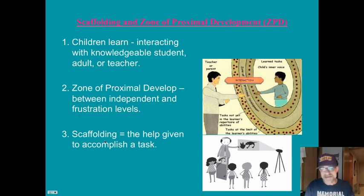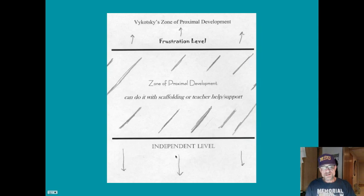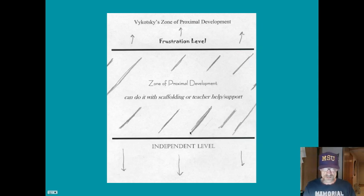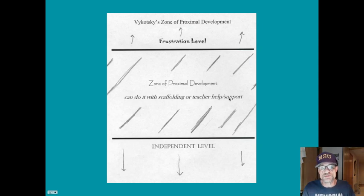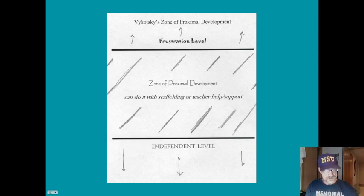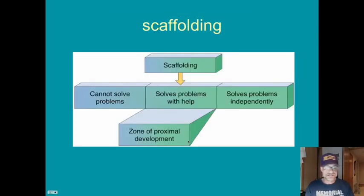The help is called scaffolding. Put more simply: we want to find out where a child is at — their independent level — get just a little bit out in front of them, give them some supports so they can learn and do the task with teacher help and support. If it is too hard, we're going to frustrate them. Too easy will bore them, so we look to find that nice zone of proximal development.